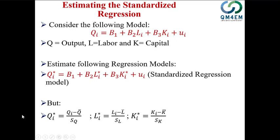There are two ways of doing that. The first way is to calculate the mean of Q, subtract it from every value, then divide by the standard deviation — a three-step process. That's a lengthy process and similarly for labor and capital. A direct way is to ask eViews to generate a new variable Q* directly as the original value minus the mean, divided by the standard deviation. Let me show you how to do that in eViews.